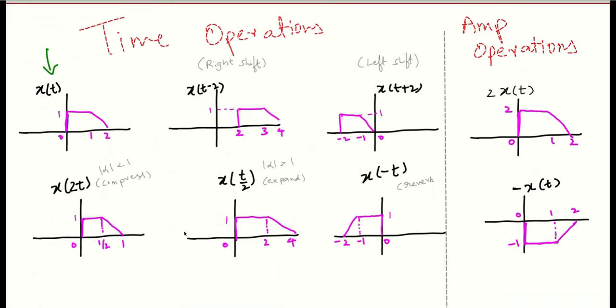This is x(t) — it is given. We need to plot x(t minus 2), that is, right shifted by 2 units. So what we are doing is we are just shifting this by 2 units. And similarly, what is x(t plus 2)? It is being left shifted by 2 units. The amplitude remains the same; it is being left shifted.